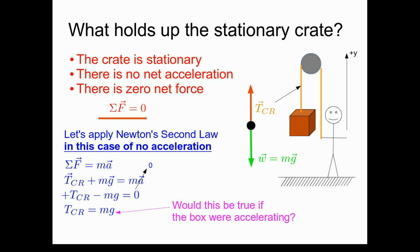Would this equality between the tension in the rope and the weight of the box be true if the box were accelerating? No. Why not? Because this equality between the tension and the weight only arose because we set the acceleration equal to zero here in the second step. If that was not true, then the tension would not be equal to the weight.